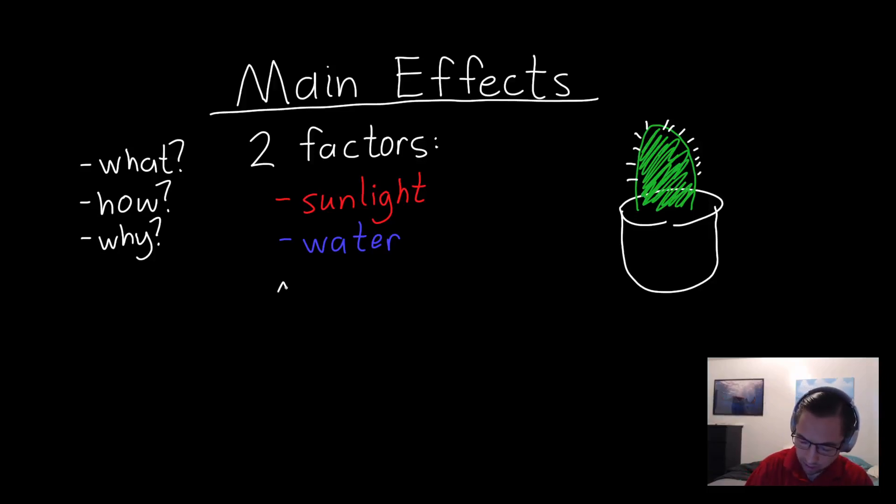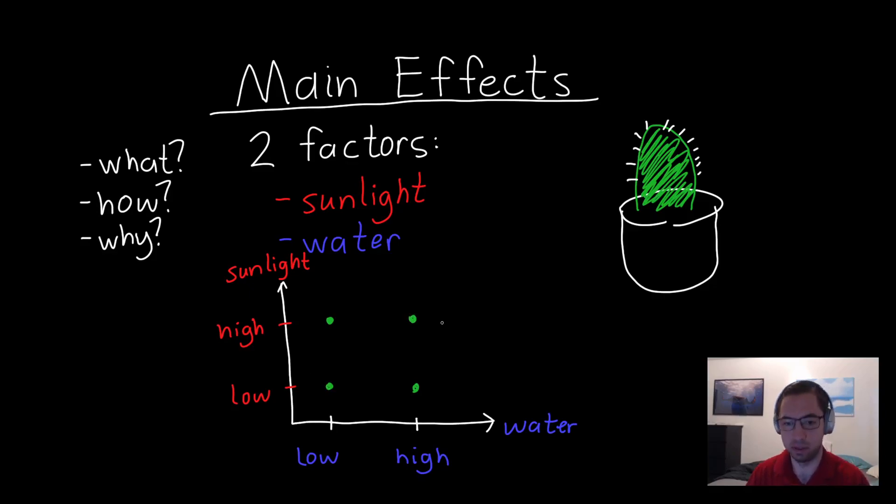And let's say that we're using a full factorial experiment where we have two different levels. So water is on the x-axis with a low level and a high level of water. And on the y-axis is sunlight, with a low level and a high level of sunlight. So the four experiments that we're going to do I can represent as dots on this graph. We have four different combinations of variables that we're testing.